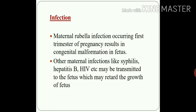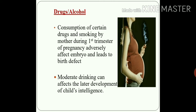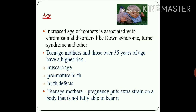In the case of infection, if a mother has rubella infection in the first trimester of pregnancy, there is an increased chance of congenital malformation in the child. Other infections like syphilis, hepatitis B, and HIV can also be transmitted to the fetus and may lead to retarded fetal growth. Regarding drugs and alcohol: if the mother consumes certain drugs or smokes during the first trimester, there will be an adverse effect on the embryo leading to birth defects. Moderate alcohol consumption can also affect the later development of the child's intelligence.